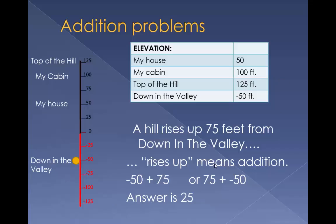Here's an example. A hill rises up 75 feet from down in the valley. Rises up means addition. Negative 50 plus 75, or 75 plus negative 50.